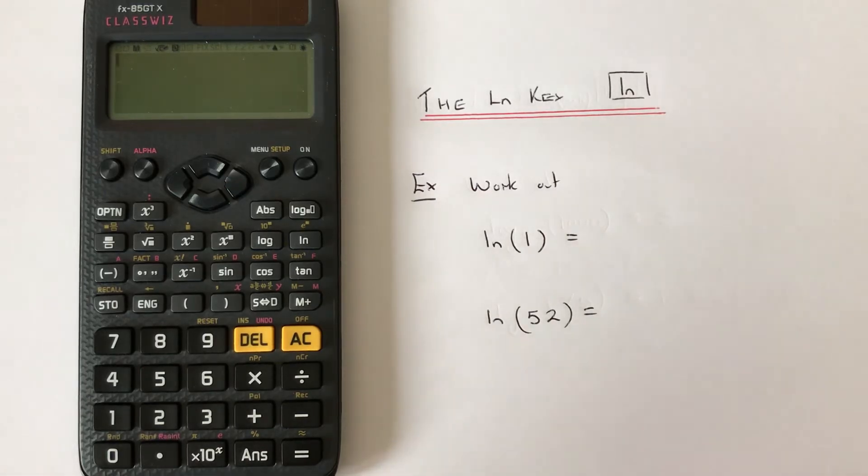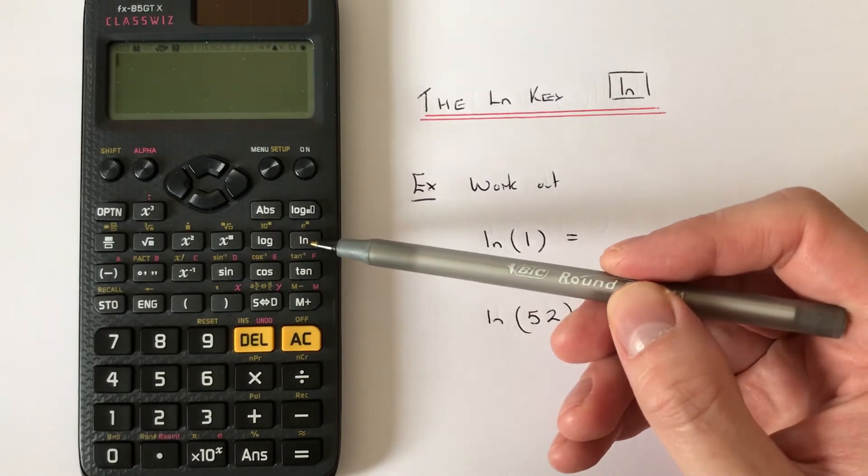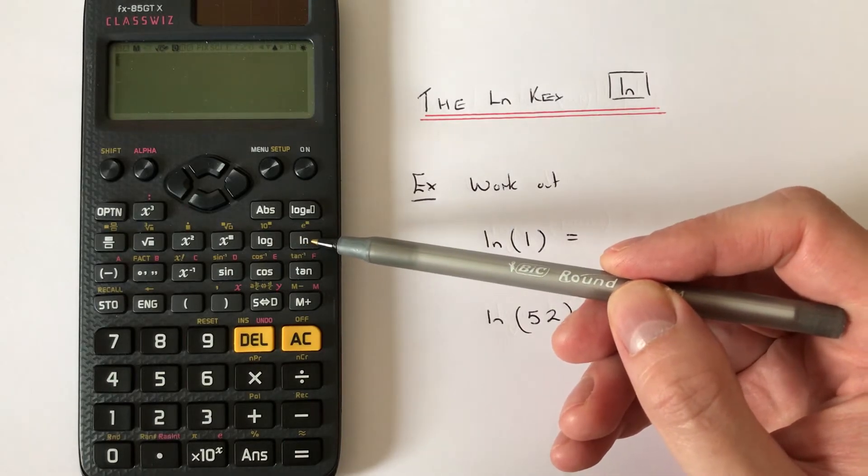So to do this we need to use the natural log key which is located on the second row of the scientific functions, which is this one here.